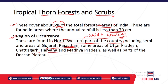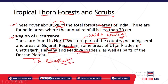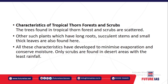These arid and semi-arid regions are found in Rajasthan, adjoining Gujarat, and some portions of Uttar Pradesh, Chhattisgarh, Haryana, and Madhya Pradesh — the drier regions. Also, some drier regions of the Deccan plateau, particularly the rain shadow areas, have tropical thorn forest and scrub forest.